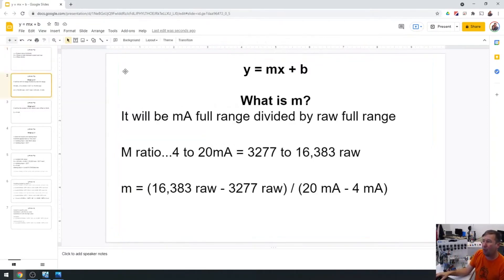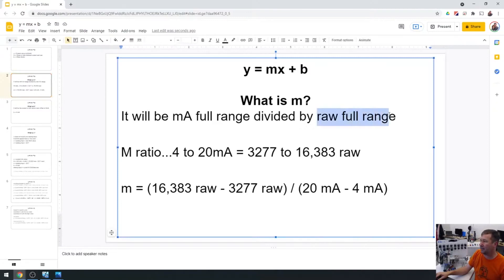So let's talk first about what is M. Because M, usually everybody can follow pretty good. So it's the milliamp full range divided by the raw full range. Actually I have that backwards. Let me correct that. Oh yeah, it is. I have something wrong here. We're going to go... oh, that's wrong. This is wrong. Cut that out.